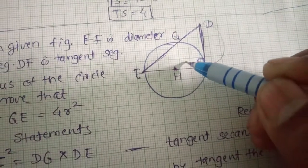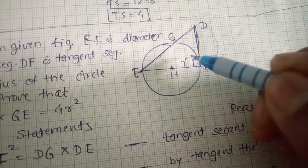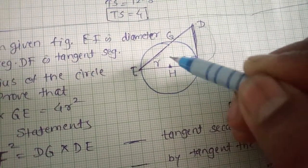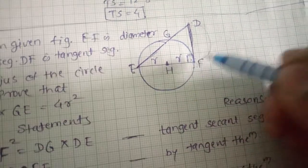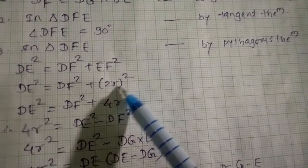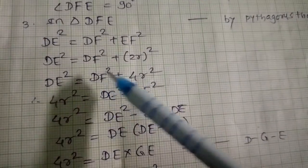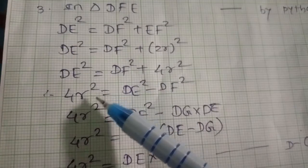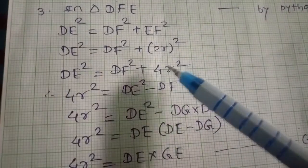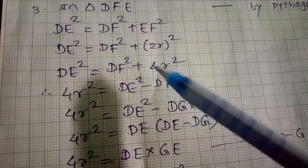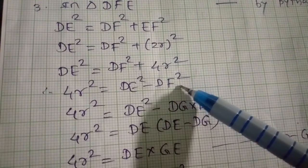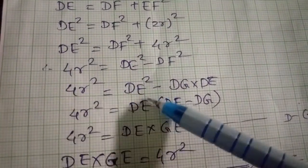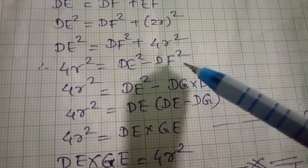Since EF is the diameter, EF = 2r. So DE² = DF² + (2r)² = DF² + 4r². Rearranging: 4r² = DE² − DF².